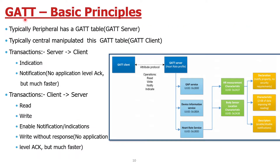Now let's look at GATT — the Generic Attribute Profile. Typically, the peripheral has a GATT table, also called a GATT server. In our case, the GATT server is located on the Thunderboard BG22. The central manipulates this GATT table using a client — that means the GATT client is our mobile app, through which we can manipulate the GATT server.